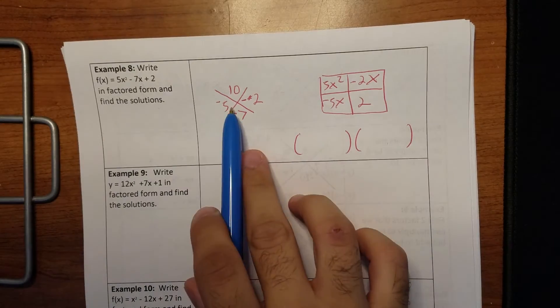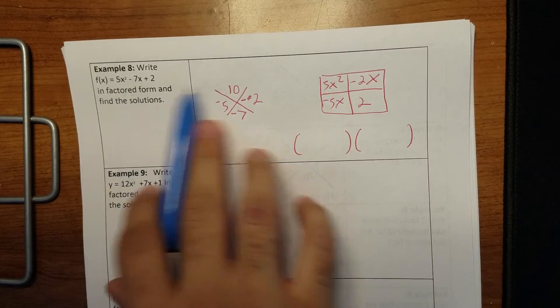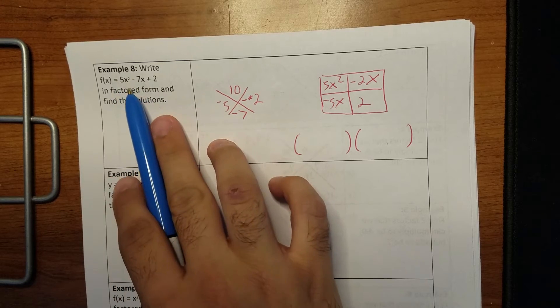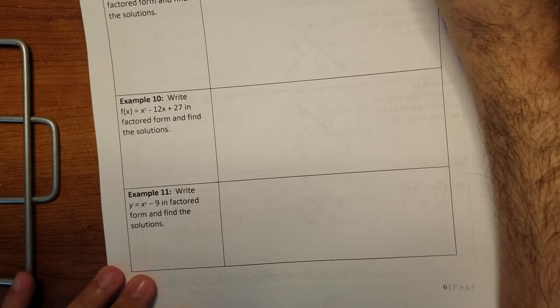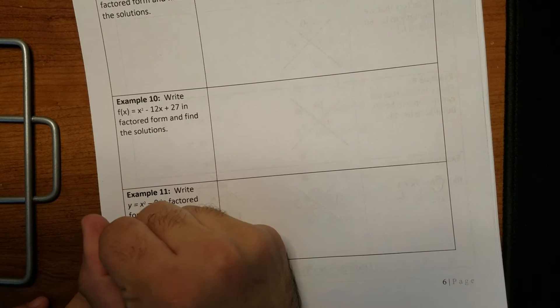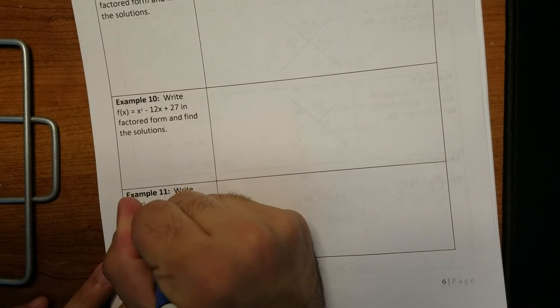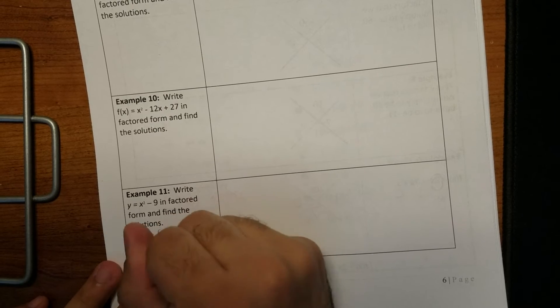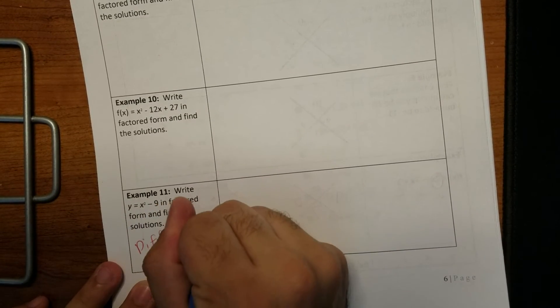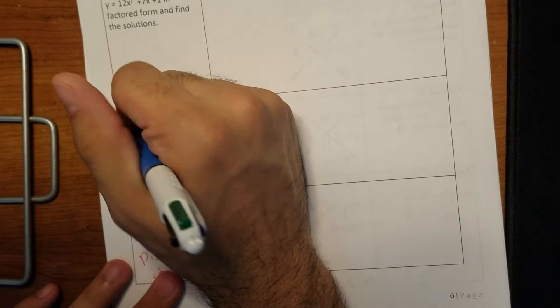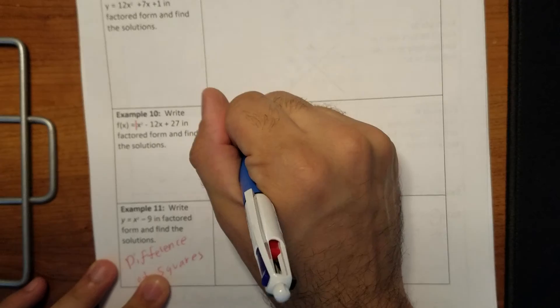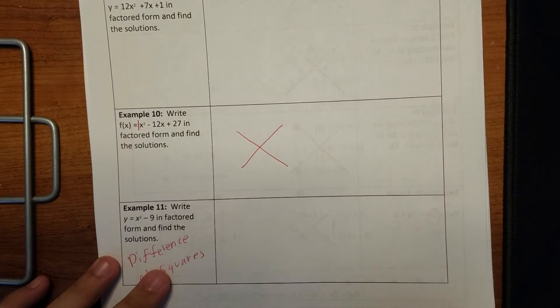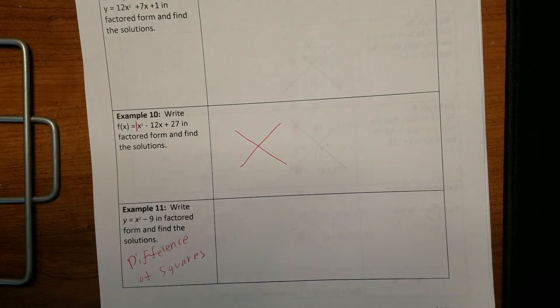So you do the X, the diamond rectangle, X box method. We know we have to do the box because we have a leading coefficient other than one. Nine, 10, 11, and 12 are basically the exact same thing, but notice number 11. It's one of those special cases that's called a difference of squares. And notice example number 10. Leading coefficient is one. So you don't even have to do the box method. All you need is the X method because the two values you'll find are gonna be exactly the same.